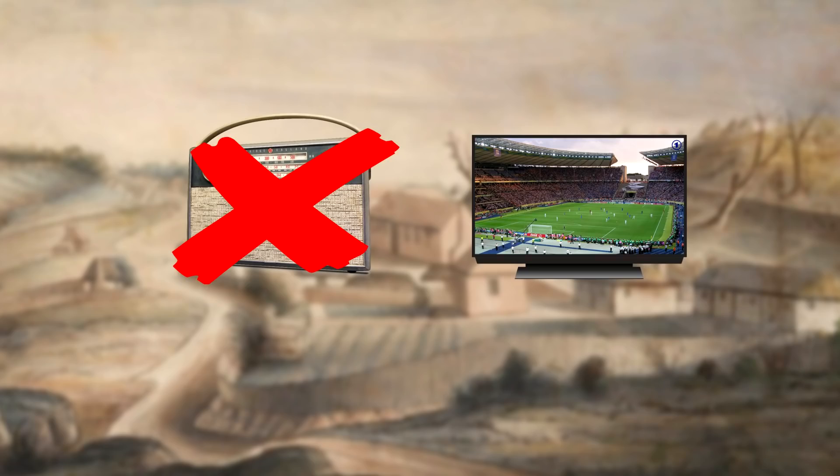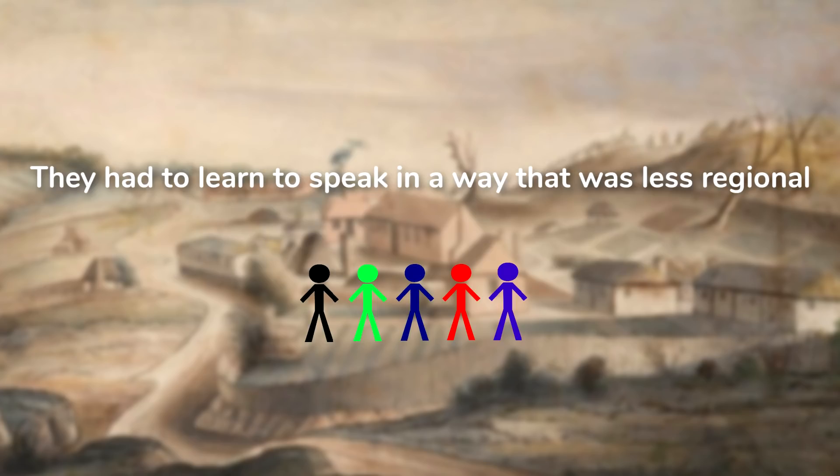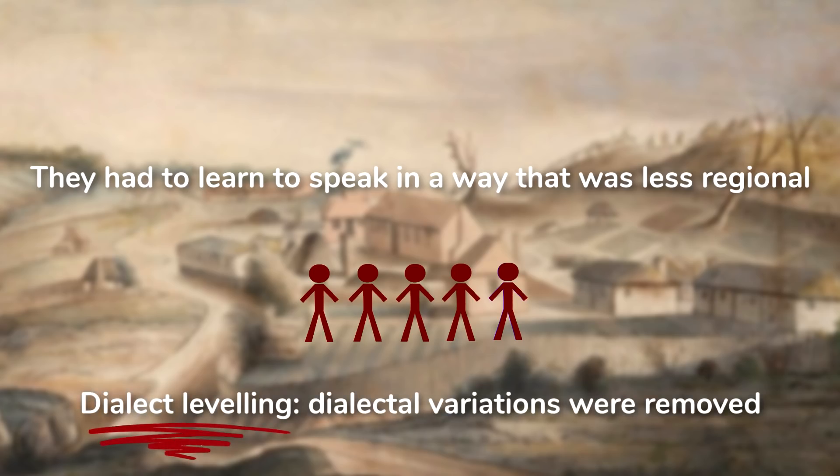Remember, back then there was no radio or television to familiarize people with different accents. In order to understand each other well, they had to learn to speak in a way that was less regional. This resulted in dialect levelling — dialectal variations were removed from their speech. You could say that the core of Australian English is a compromise between the various regional dialects of Britain and Ireland, and since then Australian English has developed its own features, words, and expressions.